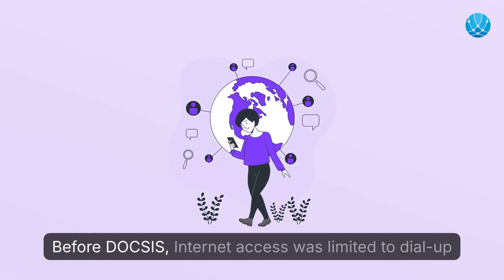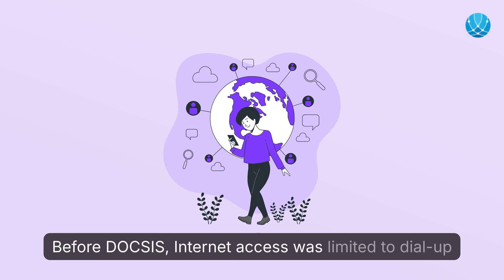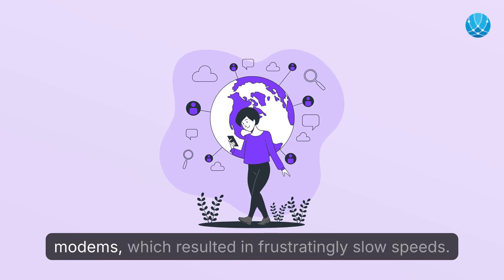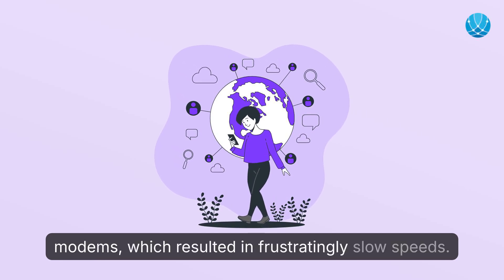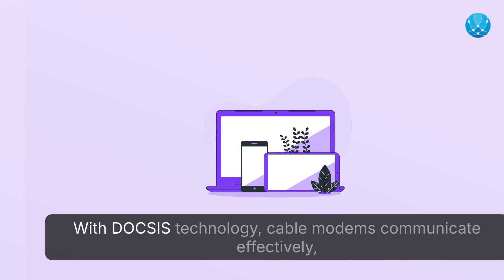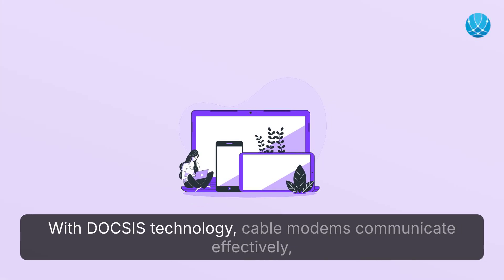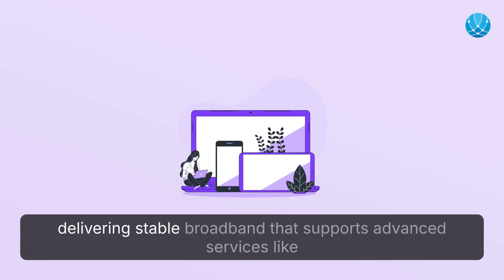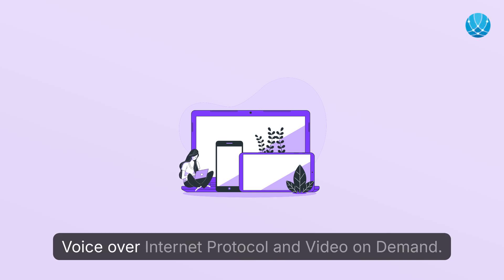Before DOCSIS, internet access was limited to dial-up modems, which resulted in frustratingly slow speeds. With DOCSIS technology, cable modems communicate effectively, delivering stable broadband that supports advanced services like Voice over Internet Protocol and video on demand.